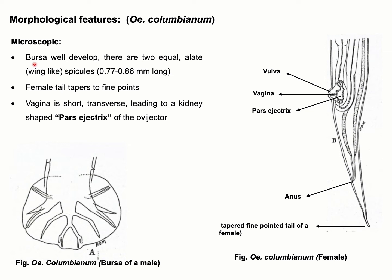The bursa is present in the male and is very well developed. There is also the presence of two equal wing-like spicules, as you can see here.